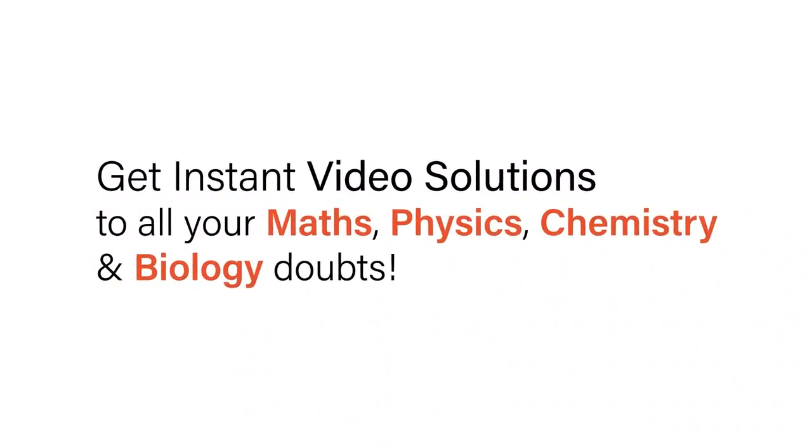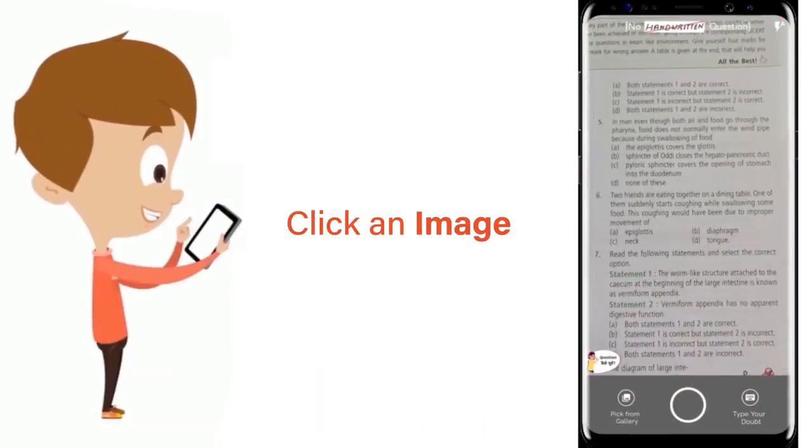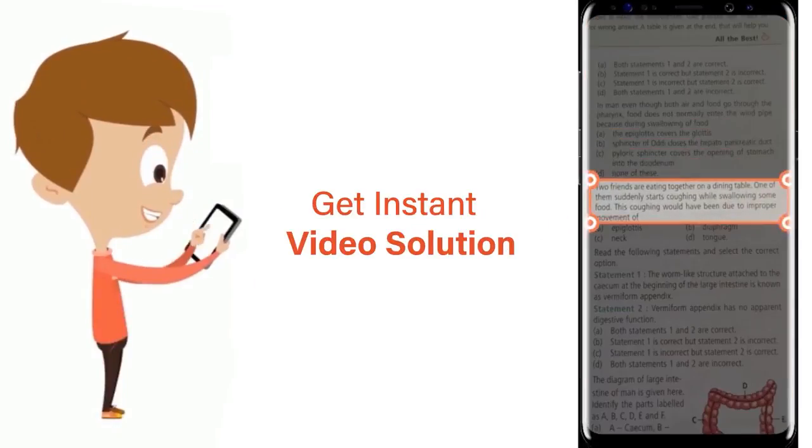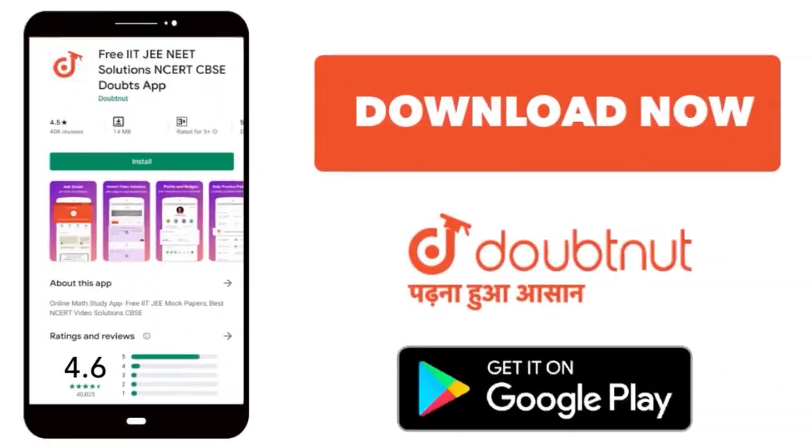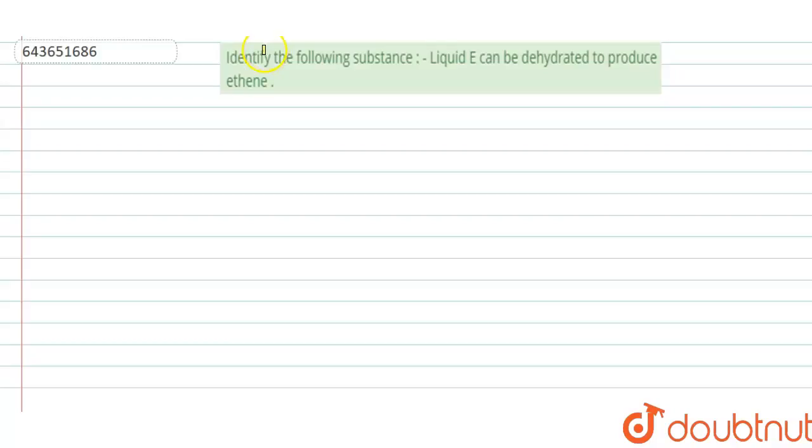With Doubtnet, get instant video solutions to all your maths, physics, chemistry, and biology doubts. Just click the image of the question, crop the question, and get instant video solution. Download Doubtnet app today. The question says: identify the following substance. Liquid E can be dehydrated to produce ethene.